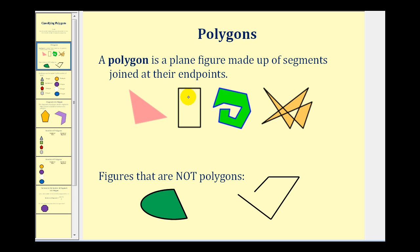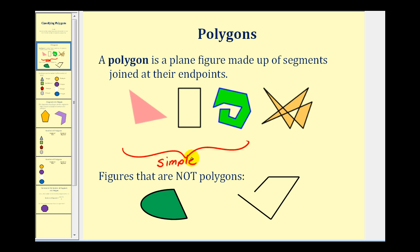For a quick review, in the intro video we defined a polygon as a plane figure made up of segments joined at the end points. There are two types of polygons: simple polygons and complex polygons. Simple polygons have sides that do not intersect each other, while a complex polygon has sides that do intersect.